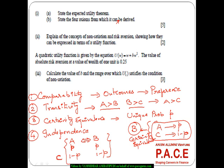Now any expected utility or theorem that is typically derived is based on these four underlying principles: the comparability, the transitivity, the certainty equivalence and the independence.